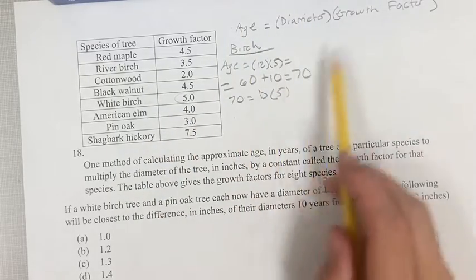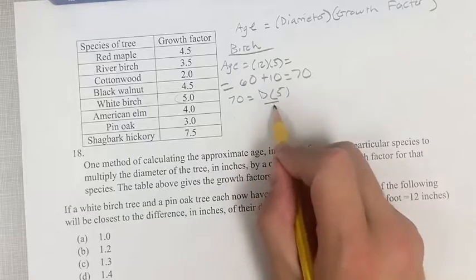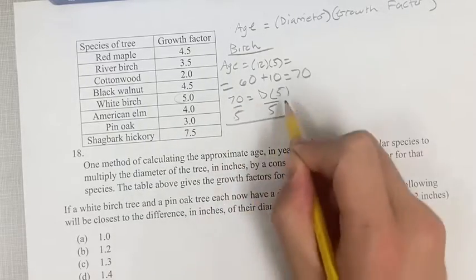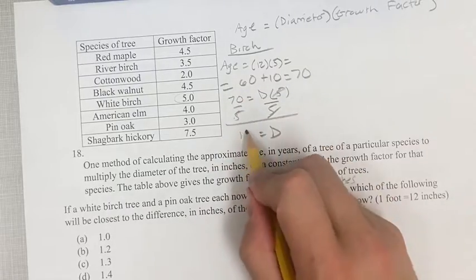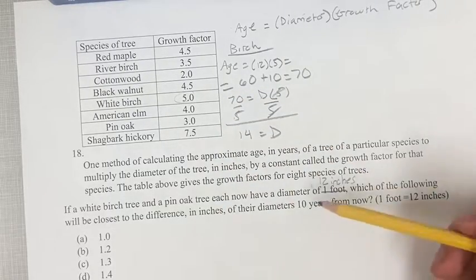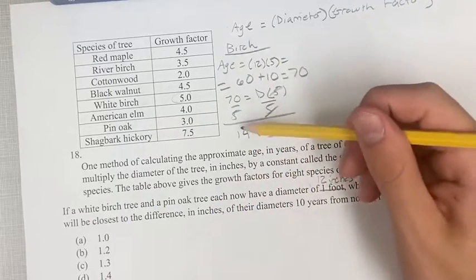So the age is equal to the diameter times the growth rate. If we divide both sides by 5, these 5s cancel and we get d is equal to 70 divided by 5, which is 14. So 10 years from now the white birch will be 14 inches.